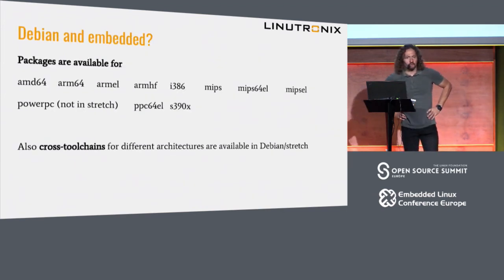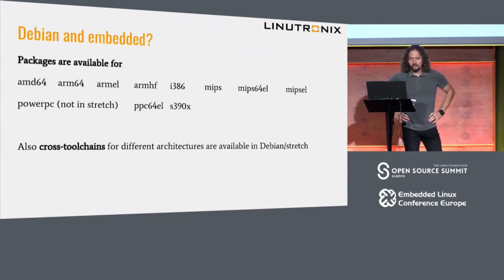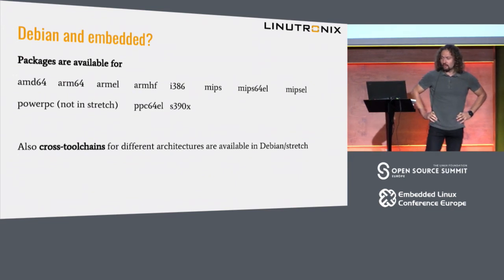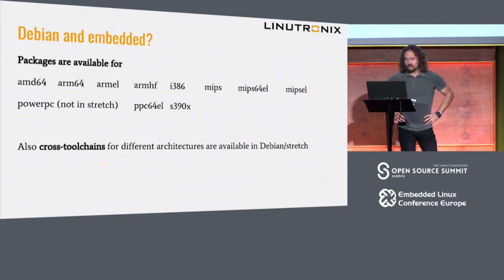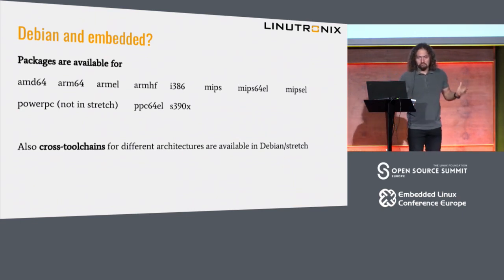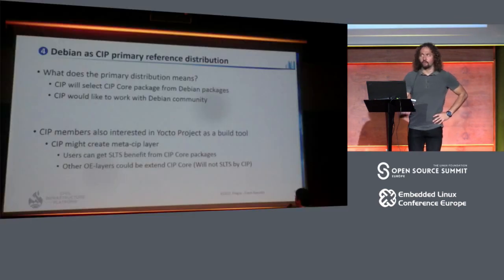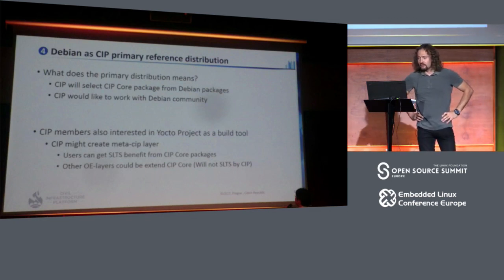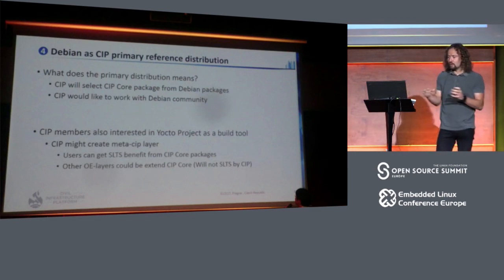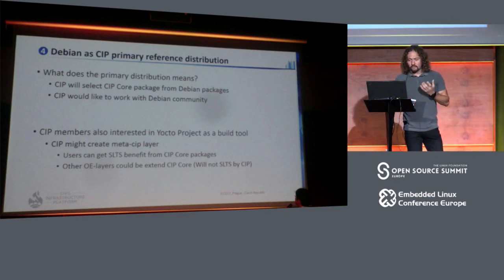So is it possible to use Debian in embedded systems? Basically, it is. You have packages available for a lot of different architectures, and there are cross-toolchains available since Stretch for different architectures. In the last talk about the Civil Infrastructure Platform project, we saw the commitment that they want to use Debian as a source for their distribution. So there are other people thinking about using Debian in the embedded world.